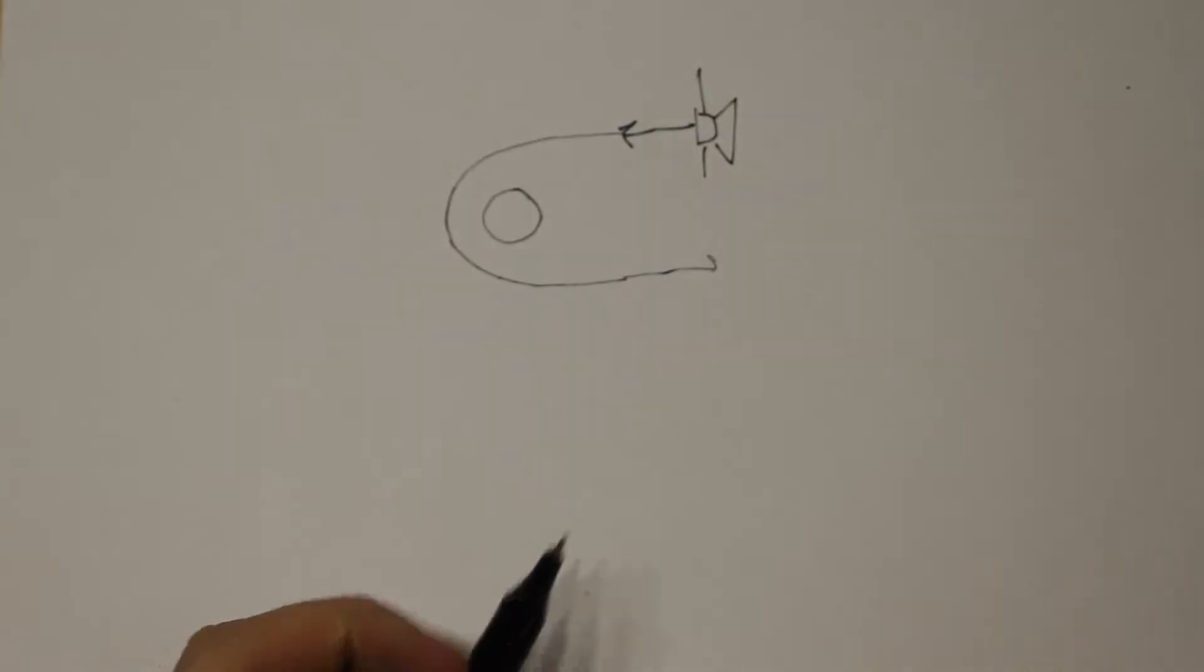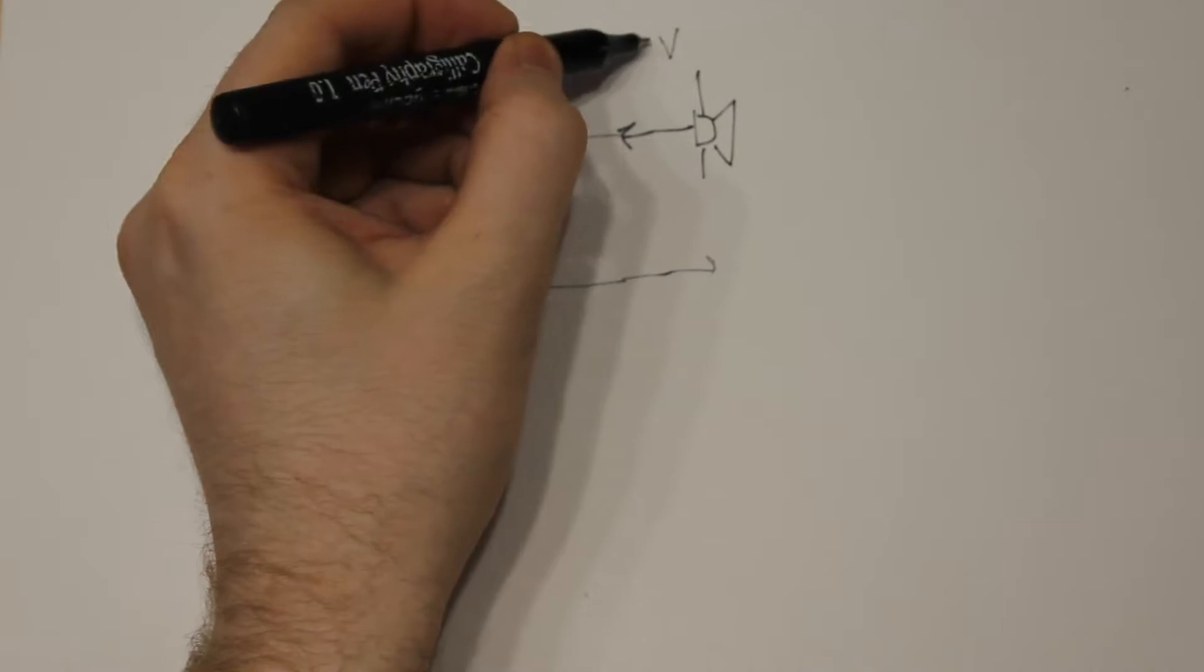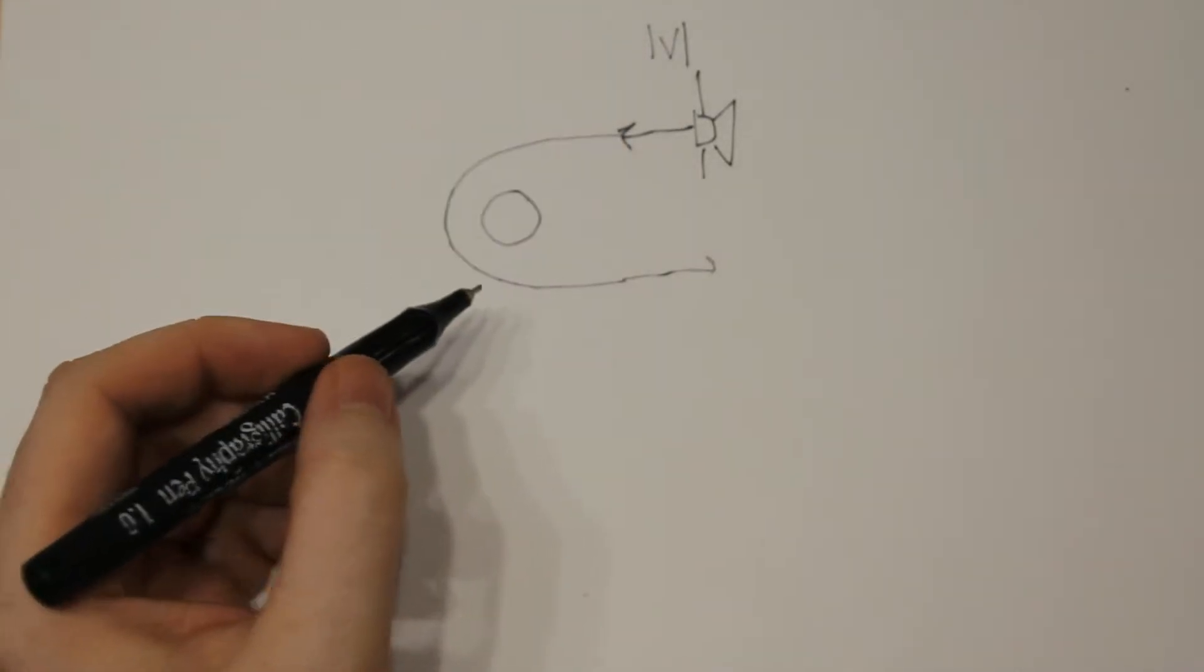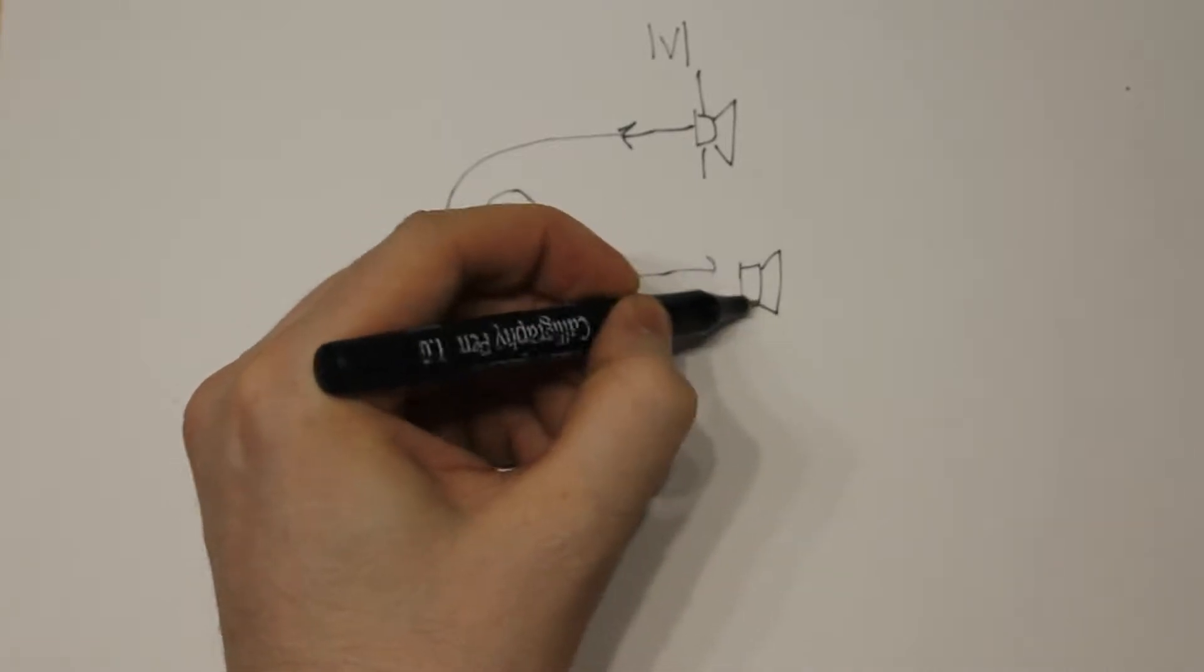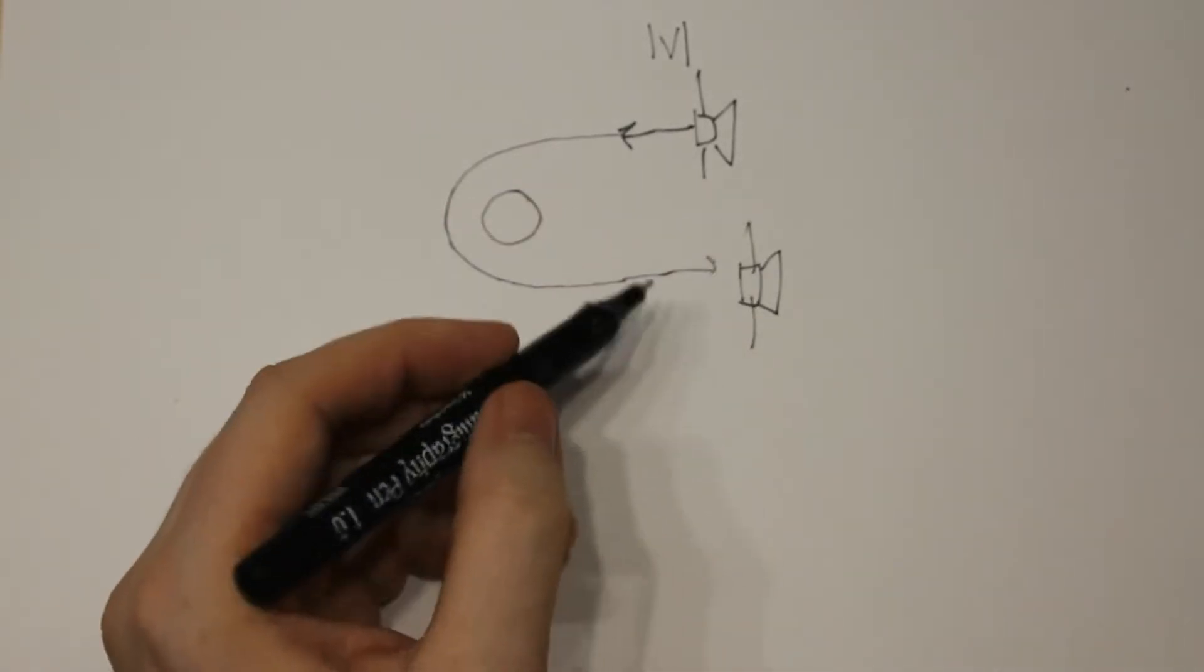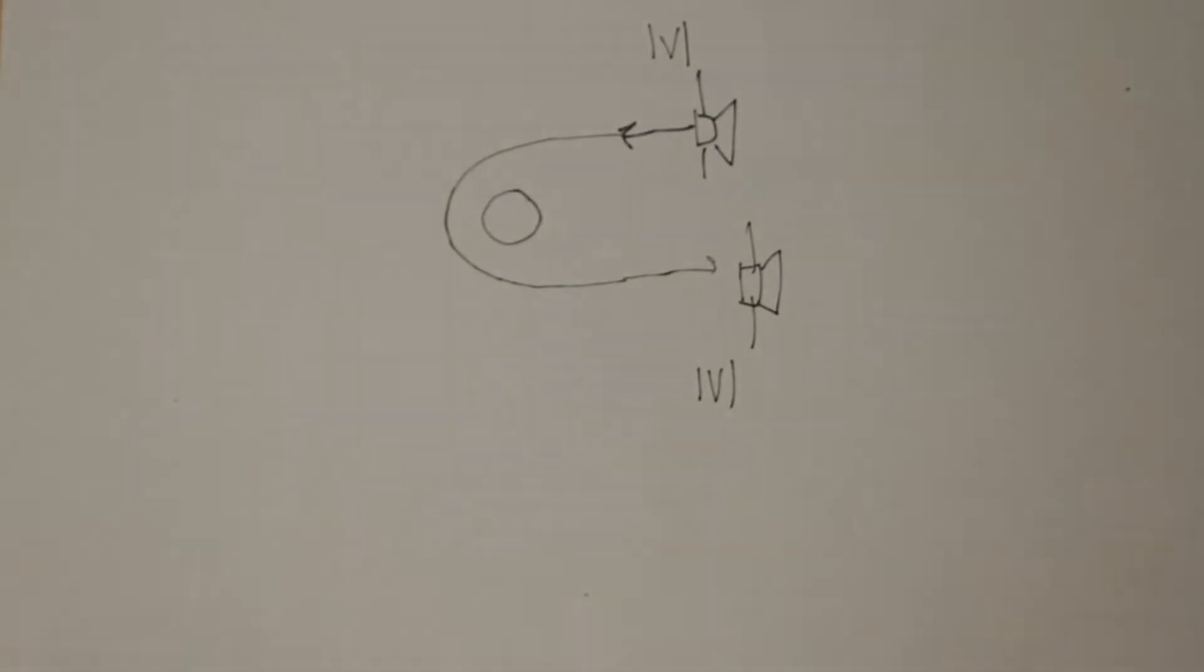If we imagine that our spacecraft was initially approaching the planet with its total speed v, when we are out here on the other side of the planet we will of course also have the total speed v, just in the opposite direction. So we didn't get any additional speed.